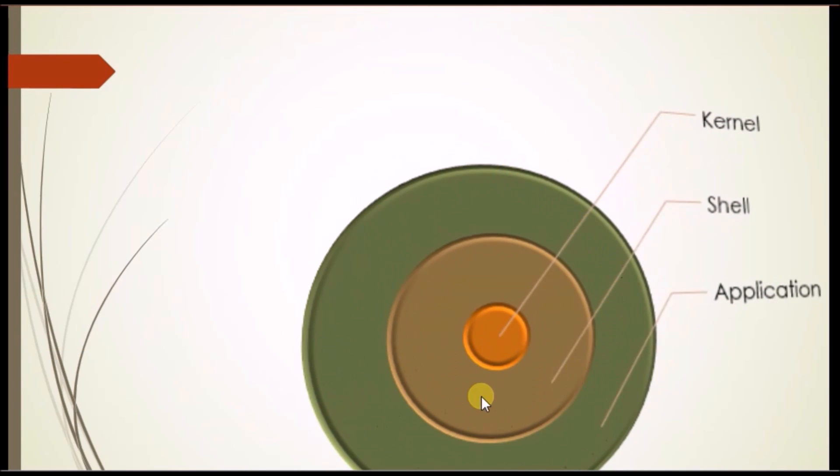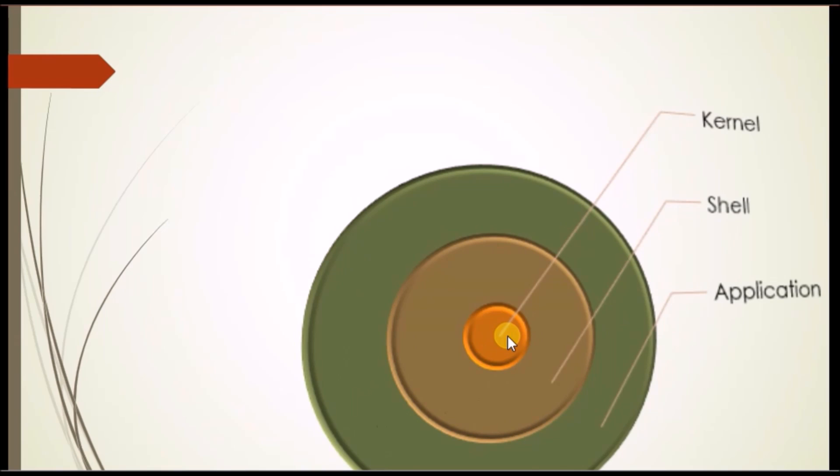In this diagram, you can see that the kernel is the central component of the operating system, or it's kind of a nucleus of the operating system. The outer part of the kernel is shell and the most outer part of the operating system is application.